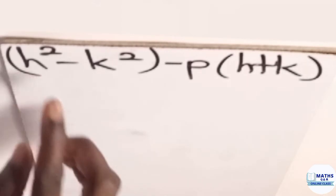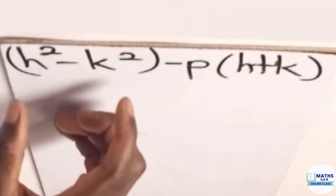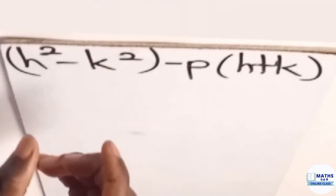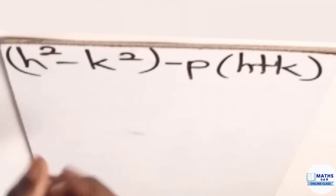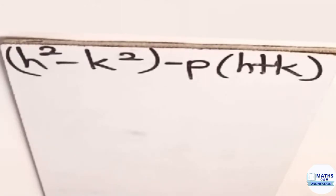Now if you look at the h square minus k square, you see that they are two perfect square numbers. And whenever you are solving perfect square numbers, we have a formula that we use. We call it the difference of two squares formula.